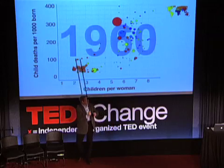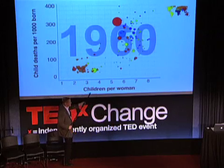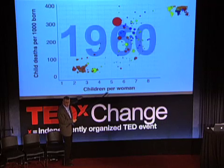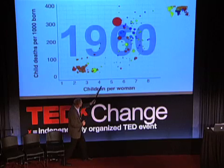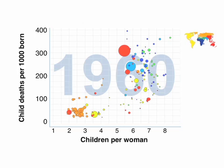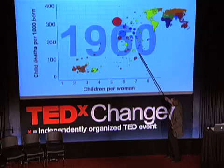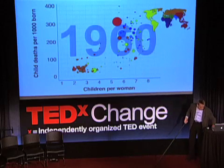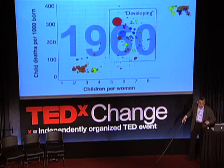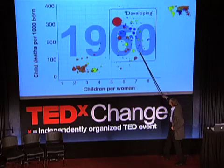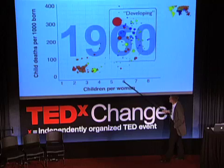Now let me bring you to a wider picture of child mortality. I'm going to show you the relation between child mortality on this axis and family size here — one, two, three, four, six, seven, eight children per woman. This is 1960, fifty years ago. Each bubble is a country, the color shows the continent, dark blue is sub-Saharan Africa, and the size of the bubble is the population. These are the so-called developing countries — they had high or very high child mortality and family sizes of six to eight.